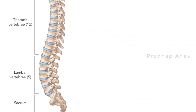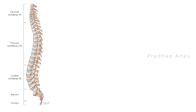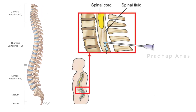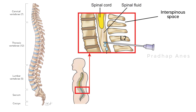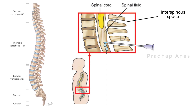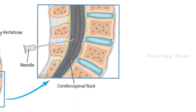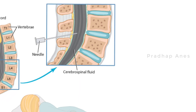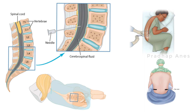Usually, spinal anesthesia is given by making a lumbar puncture. Lumbar puncture is a procedure of passing a long, fine needle through an interspinous space in the lumbar region below the level of L2 to reach the subarachnoid space of the dural sac. This can be performed in any interspinous space between L3 and L4 when the patient is kept in a right lateral or sitting position with a well-flexed spinal column.